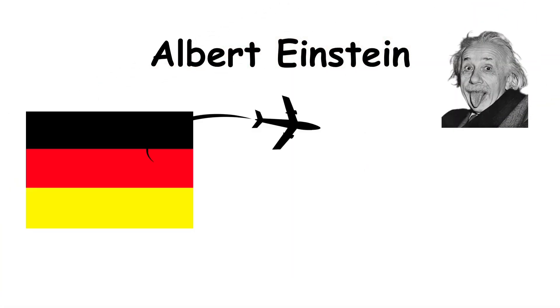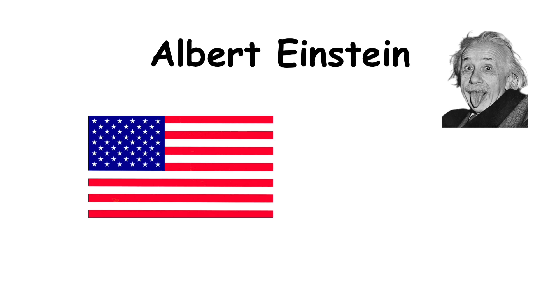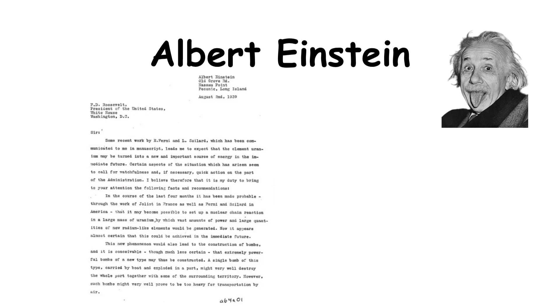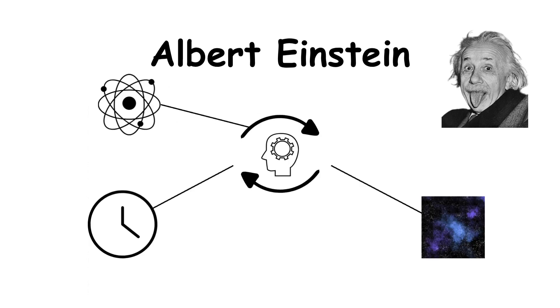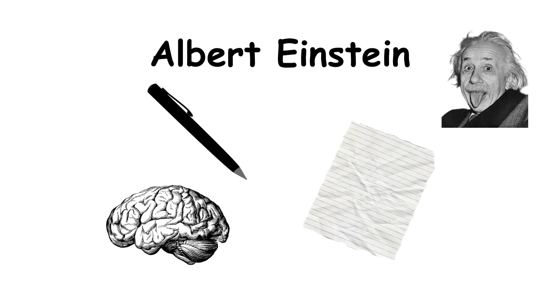Einstein left Germany when the Nazis rose to power and spent the rest of his life in the US, warning about nuclear weapons but never building them. He changed how we understand time, space, matter, and energy, and he did it with a pen, paper, and pure thought.